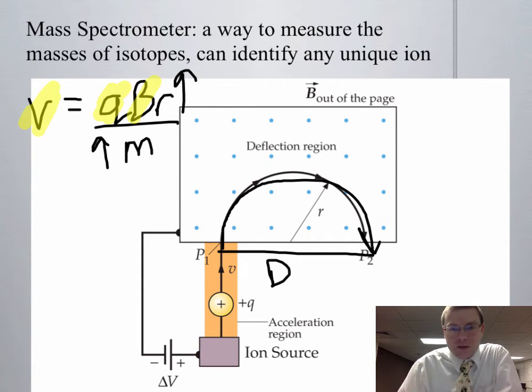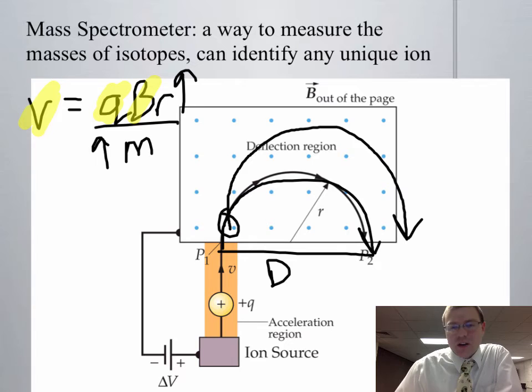So they go through this deflection area, and the further they get deflected, the heavier the mass. Because if you think about it, the heavier the mass, the more it wants to maintain straight line motion, and the harder the magnetic field needs to work to try and arc it.